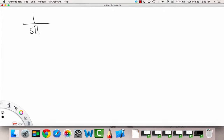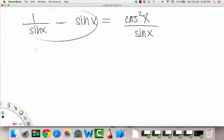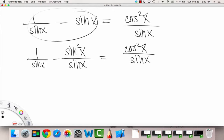1 over sine x minus sine x is equal to cosine squared x over sine x. Let's just keep proving this, or finish the proof of this. So let's get a common denominator on the left-hand side. So we'll say 1 over sine x minus sine squared x, because we're multiplying both top and bottom by sine x, is equal to cosine squared x over sine x.